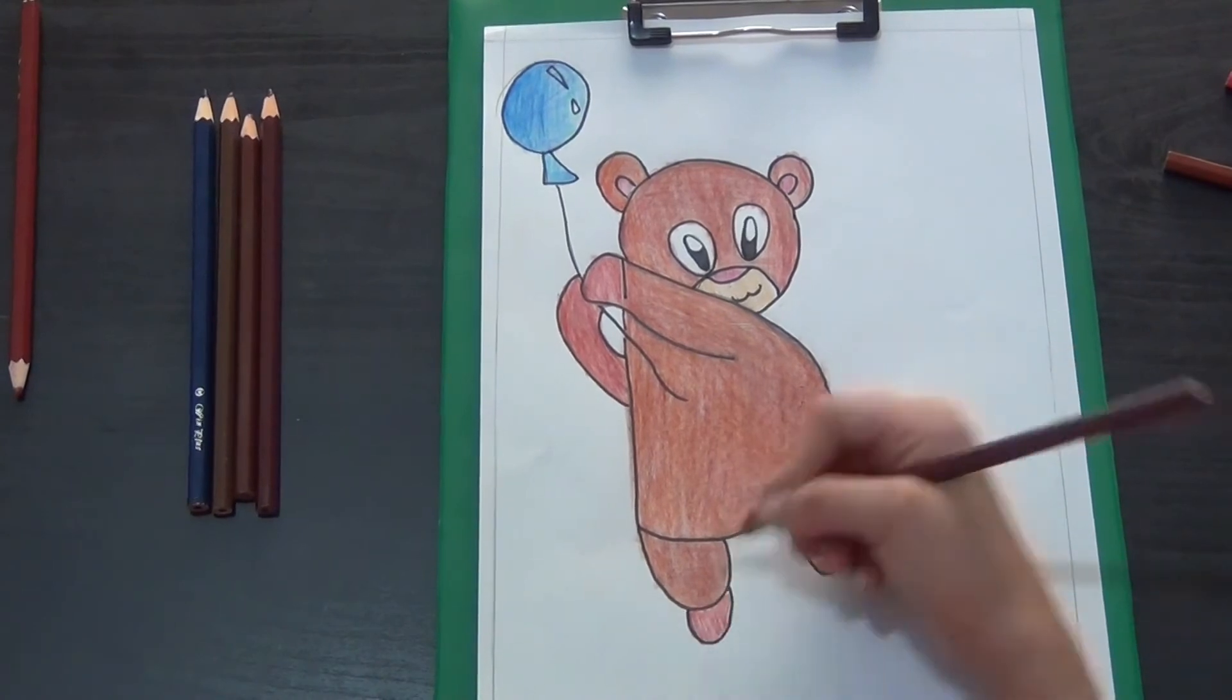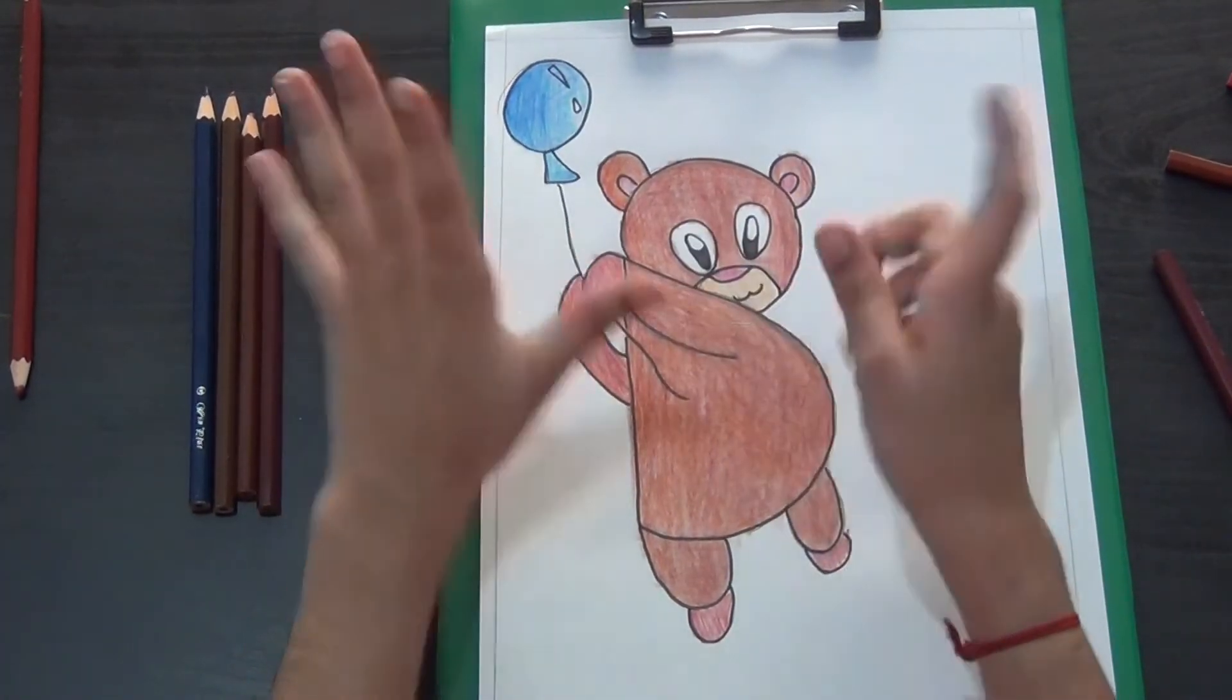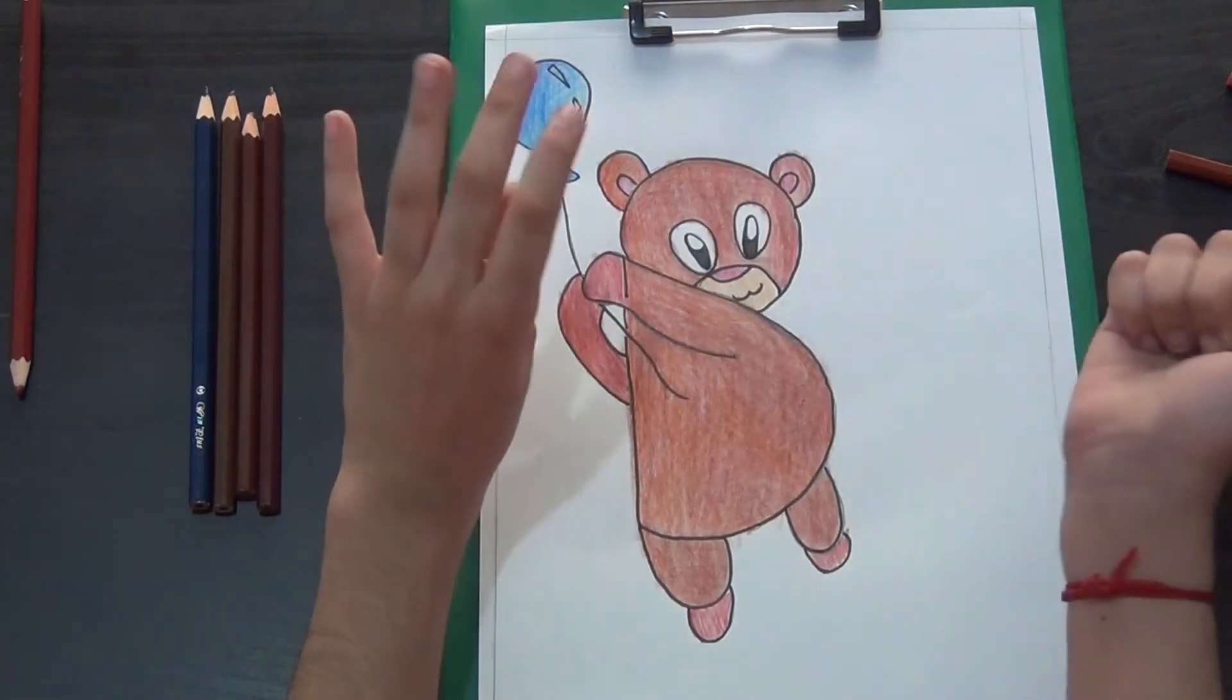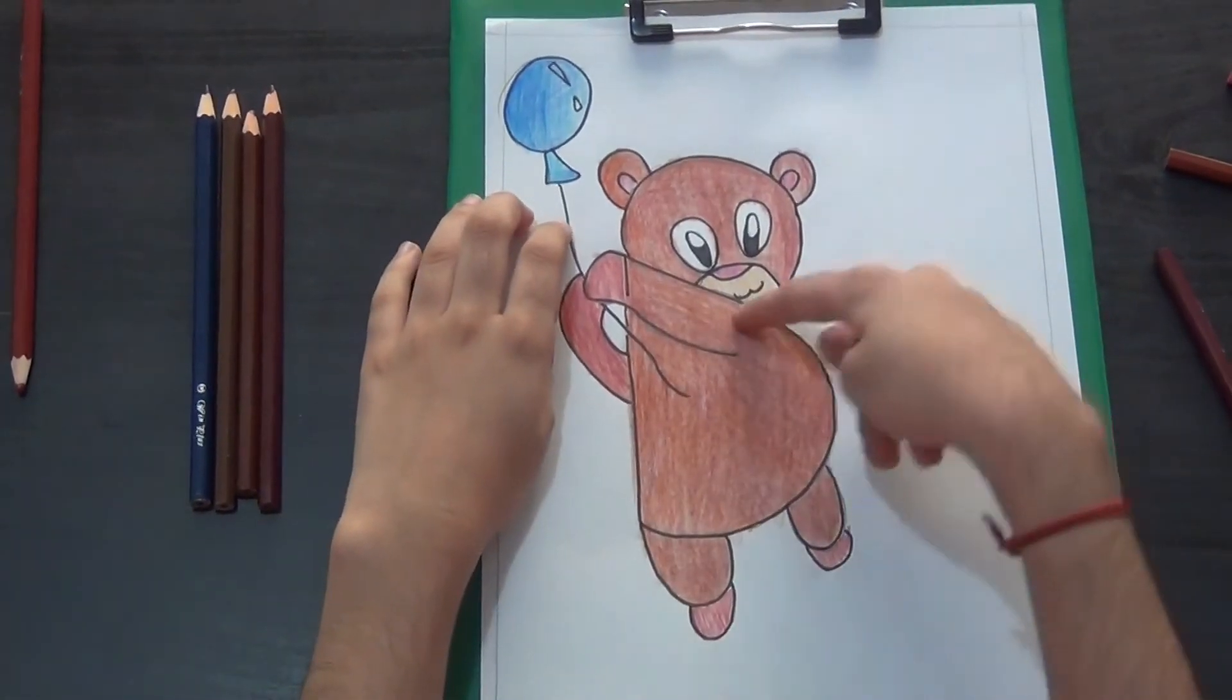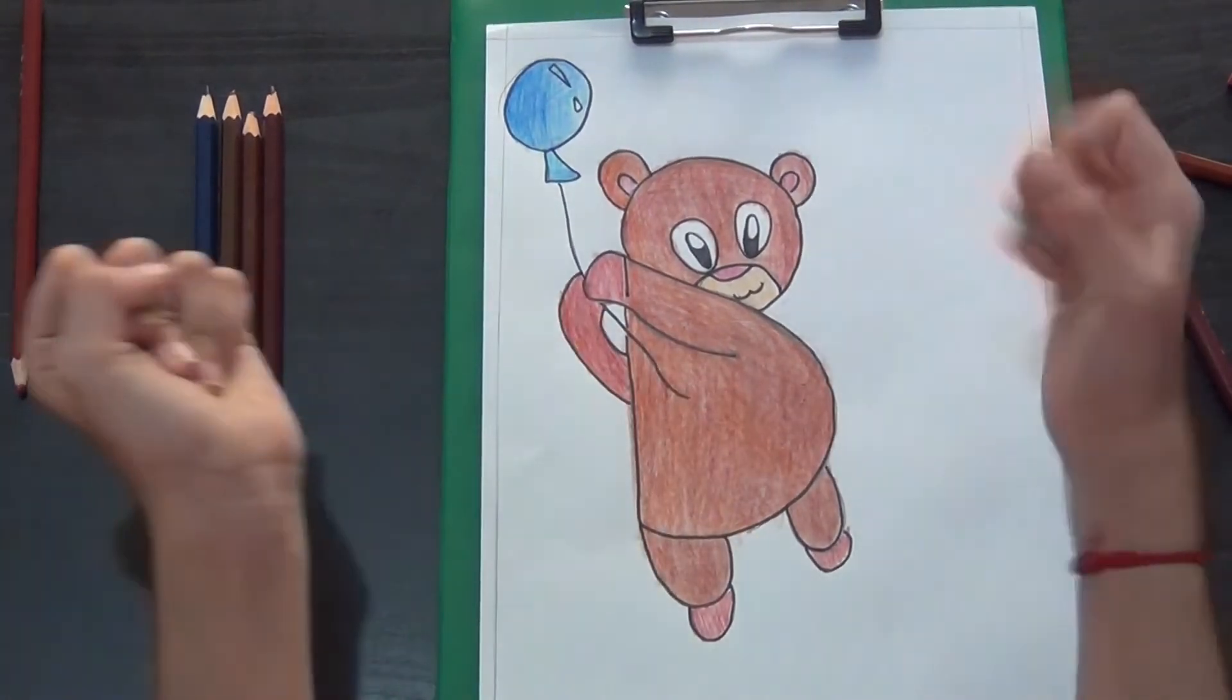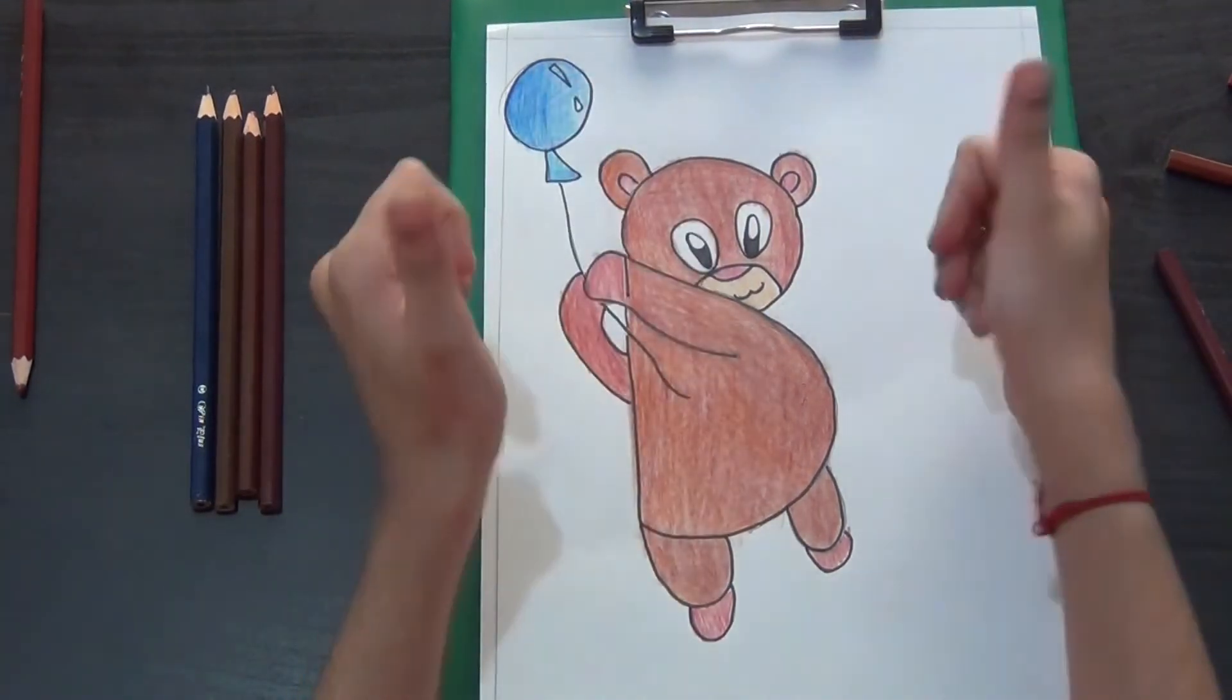Now I'm done with the cute little bear. And can you see? It is flying with the balloon. So I have done drawing the bear using the letter B. You also can try the same. It's very easy. So like this video, subscribe, and thanks for watching.